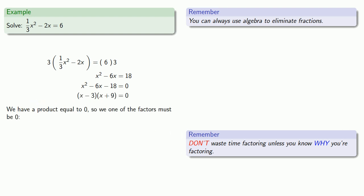And so now we have a product equal to zero, so one of the factors must be zero. Either x minus 3 is zero, or x plus 9 is zero. So solving these two equations gives us our solutions, x equals 3 or x equals minus 9.